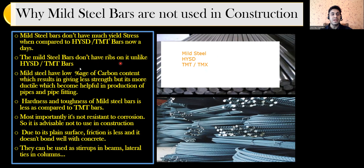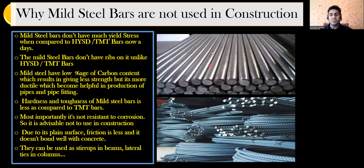The second reason is that mild steel bars don't have ribs on them, unlike HYSD or TMT bars. As you can see in the image, mild steel bars are very plain — plain rebar — whereas TMT, TMX, and HYSD bars have ribs. Without ribs, there won't be good bonding between the rebar and the concrete, which is another reason we no longer use mild steel.